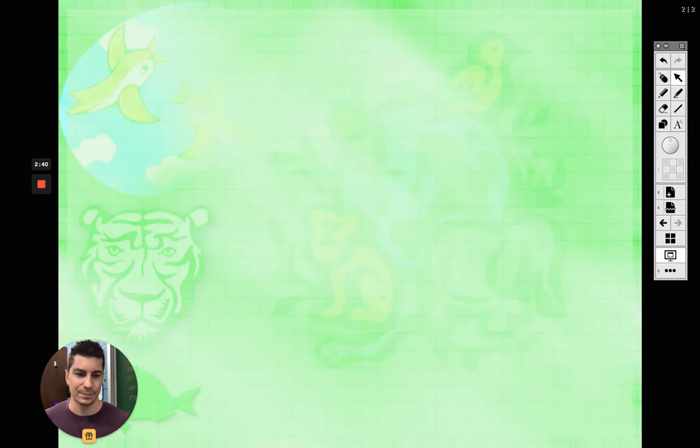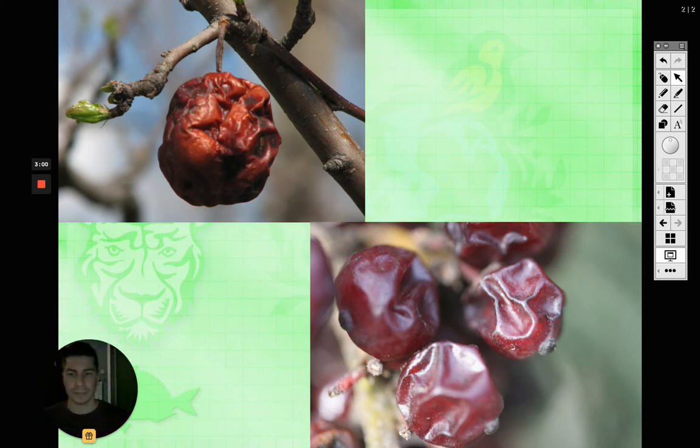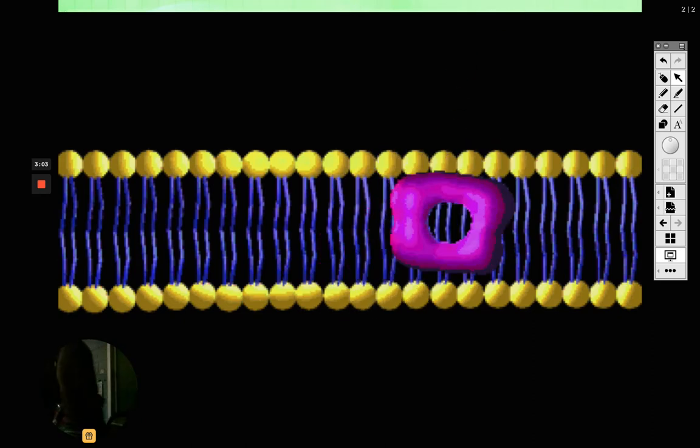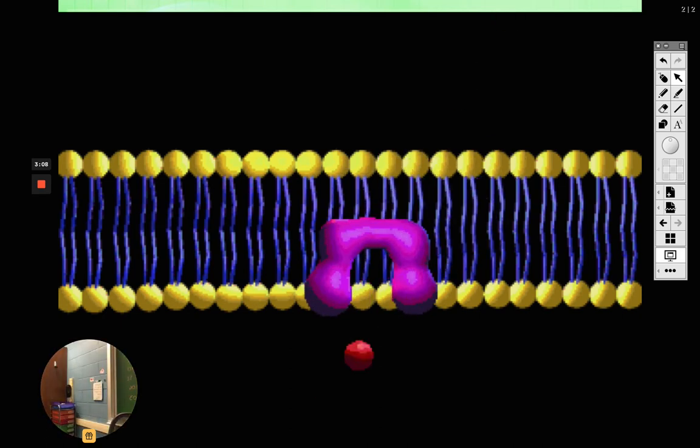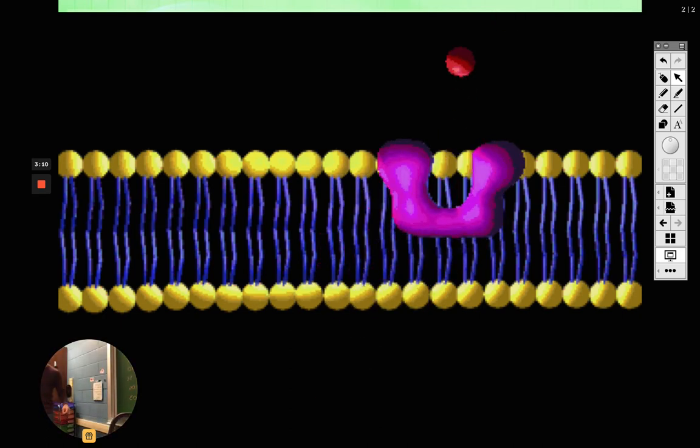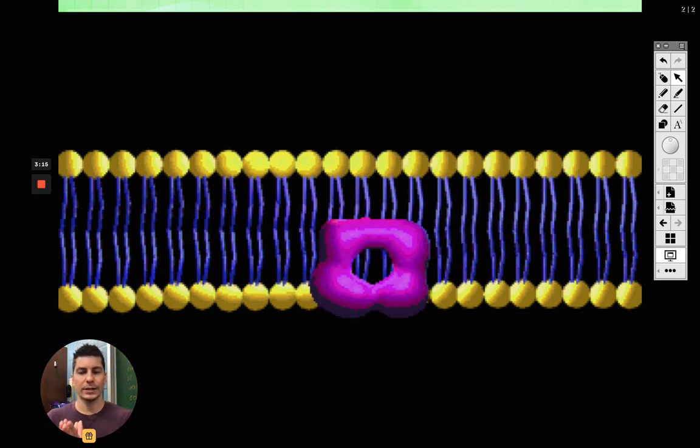So we're also going to talk about water moving out of our cells as well in this chapter. So here's some fruits - obviously they lost some water, so they are very shriveled up. That can happen too.